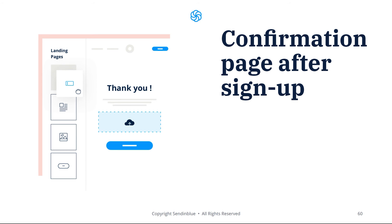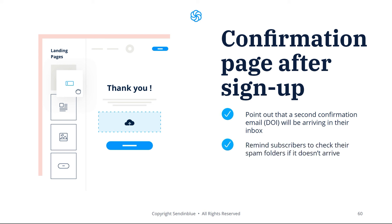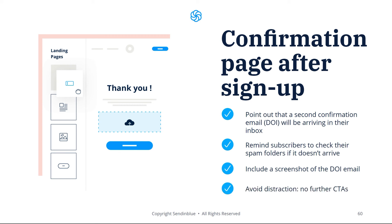Now let's talk about the confirmation page after sign up. Once a user submits your form, they'll either see a message or land on a new page giving them a little bit more information. Make sure that you point out that a second confirmation email or double opt-in will be arriving in their inbox shortly. You should also remind subscribers to check their spam folders if it doesn't arrive. Make sure to include a screenshot of the double opt-in email so that they know what to expect. Also, avoid distractions on this page — you shouldn't have links or CTAs to other areas of your product or website.